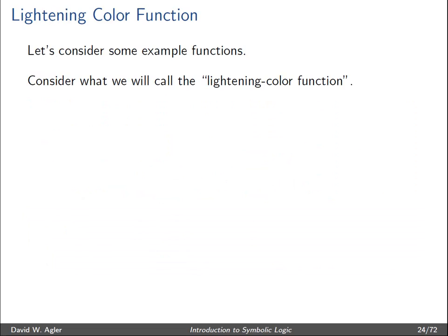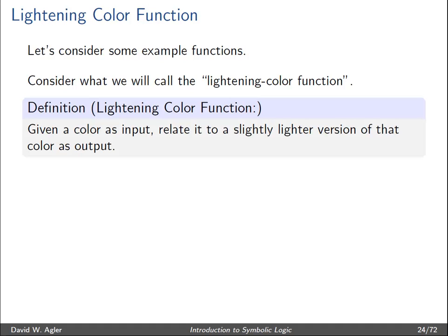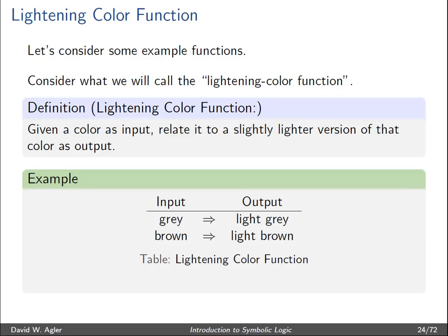Let's consider a function called the lightening color function. This function takes any color as an input and relates it to an output which is simply a lighter version of that color. So if we had gray as input, the output would be light gray. If we had brown as the input or argument of that function, the output would be light brown.